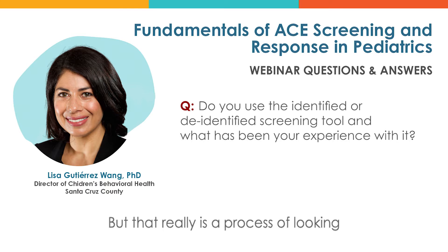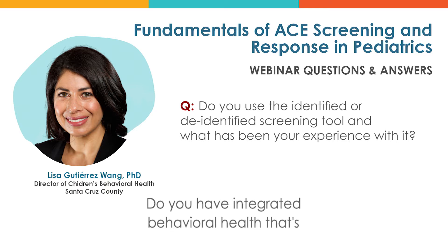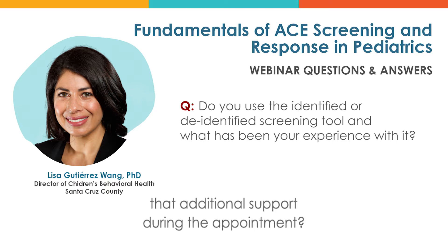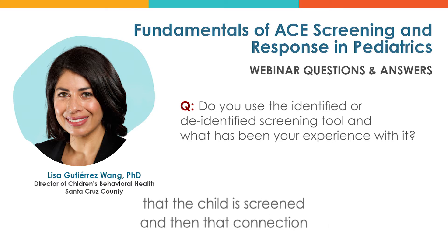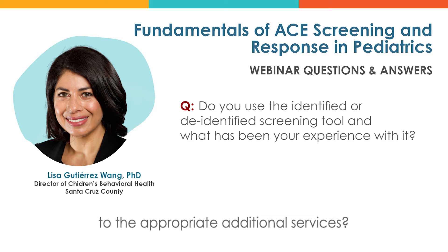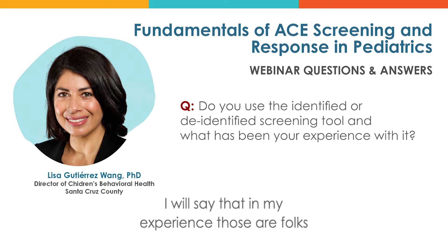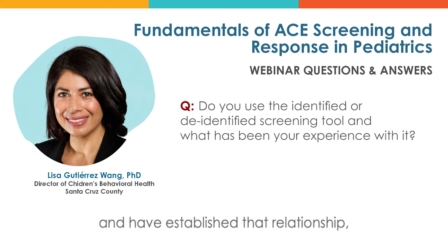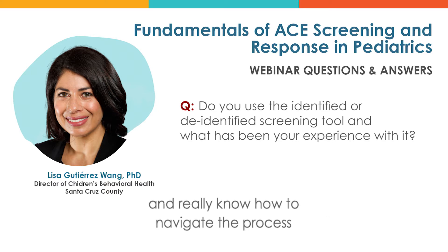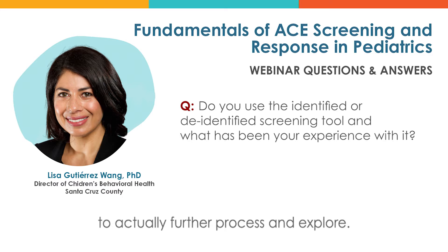The decision to use the identified versus the de-identified version is really a big decision. There are some primary care settings that want information about which types of adversity the child has been exposed to and choose the identified version. That really is a process of looking at both options, understanding what resources you have within your own clinic — do you have integrated behavioral health available, clear referral sources, and smooth transitions so there isn't a large gap between screening and connection to appropriate services?